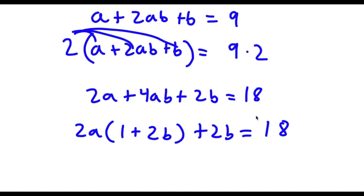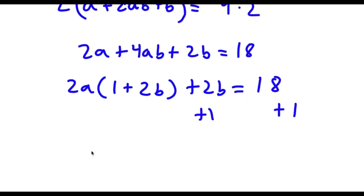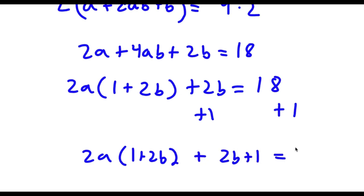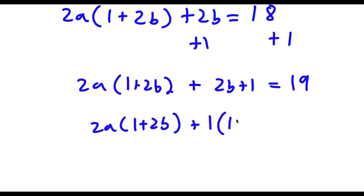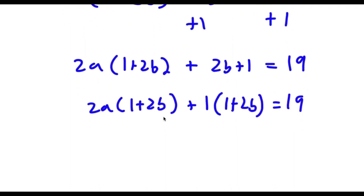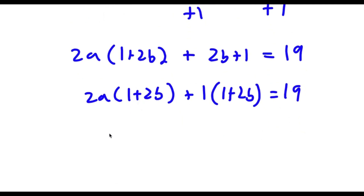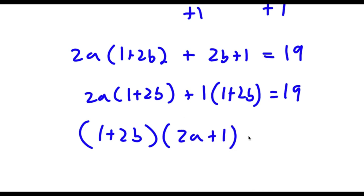Now I'm going to add 1 on both sides. So now I have 2a times (1 plus 2b) plus 2b plus 1 is equal to 18 plus 1, which is 19. Now, 2b plus 1 we can rewrite as 1 times (1 plus 2b). So if I factor out (1 plus 2b) from here, I get (1 plus 2b) times (2a plus 1), and this is equal to 19.